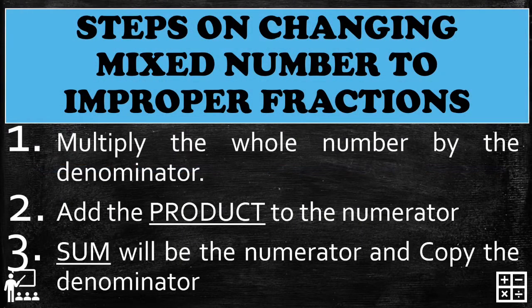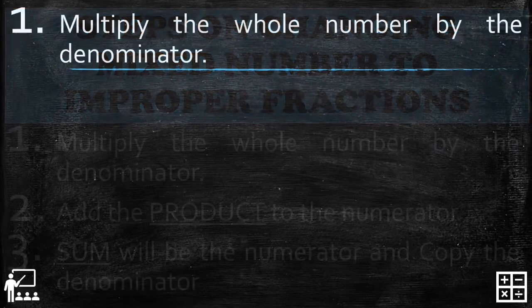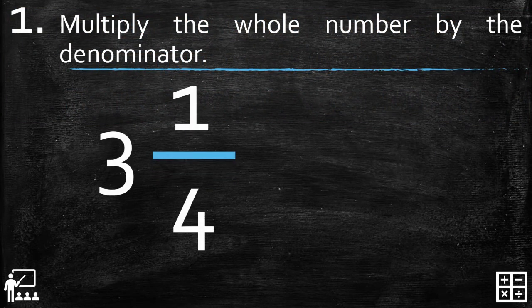Let's proceed to the steps on changing a mixed number to an improper fraction. We have three easy steps: first, multiply the whole number by the denominator; second, add the product to the numerator; and last, the sum will be the numerator and just copy the denominator. Let's try it.